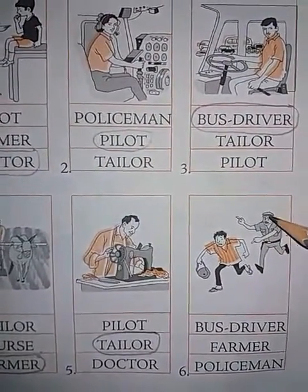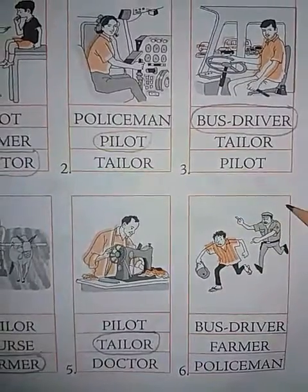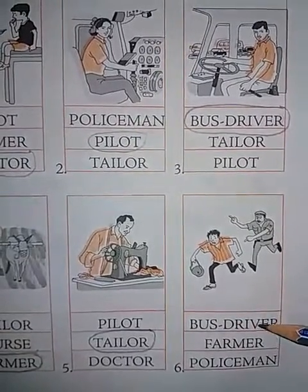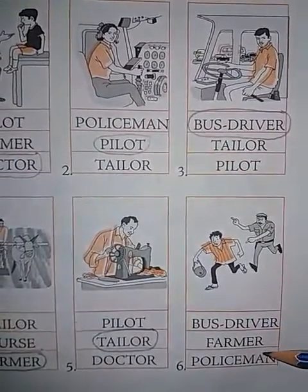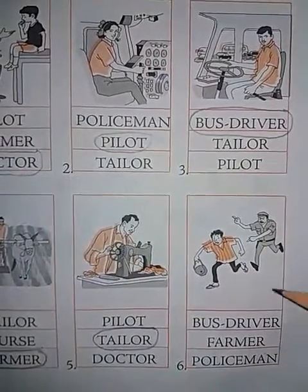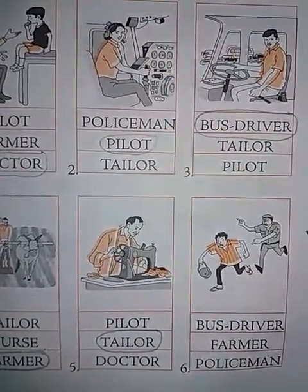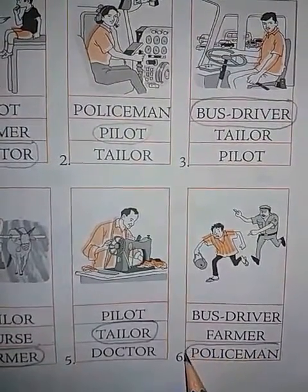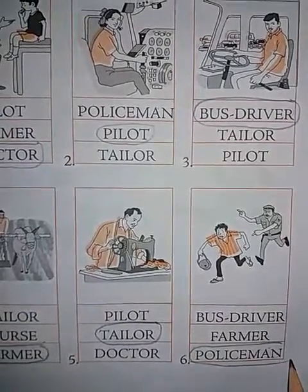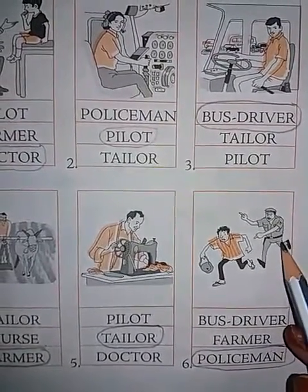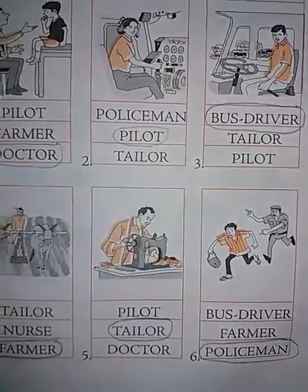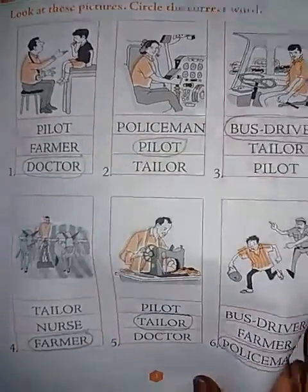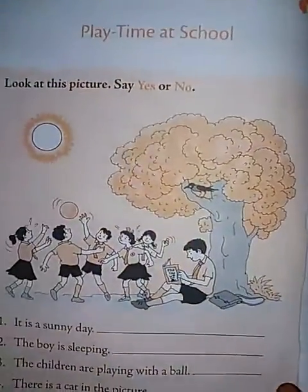Next, what is he doing, children? Can you guess? And who is he? Is he bus driver, farmer or policeman? Policeman — the one who catches the thief is called? Yes, very good. Policeman. P-O-L-I-C-E-M-A-N. Policeman. And he wears a uniform. Alright, children, very good. You have identified very nicely. Now, let us turn the page and see the next worksheet.